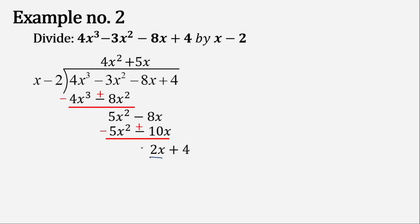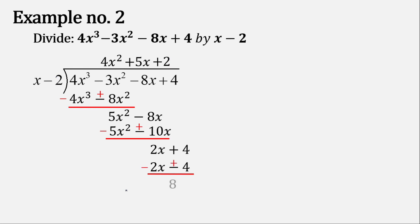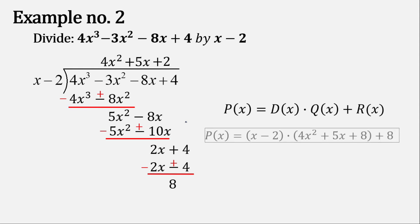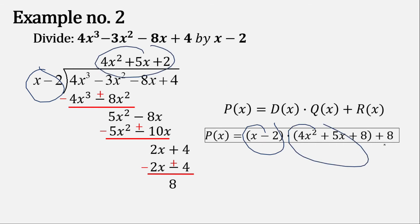Divide again: 2x divided by x is 2. Then 2 multiplied by x is 2x, and 2 multiplied by negative 2 is negative 4. Change the sign and add — the answer is 8. Now, the degree of 8 is 0 and the degree of the divisor is 1, so 8 is less than the divisor's degree. We end the process here. The divisor is 2x minus 2, the quotient is 4x squared plus 5x plus 2, and the remainder is 8.